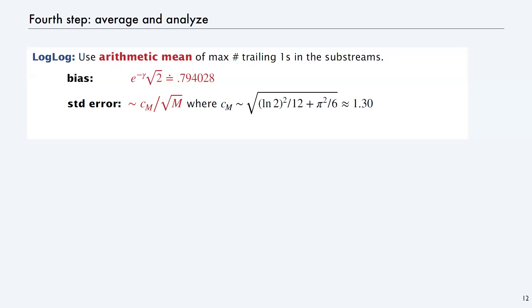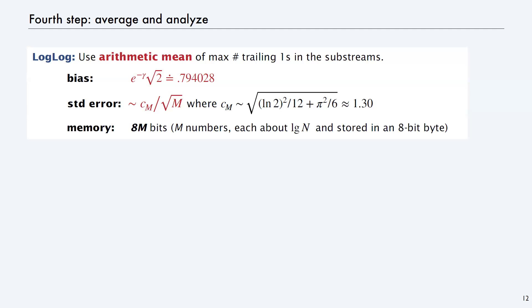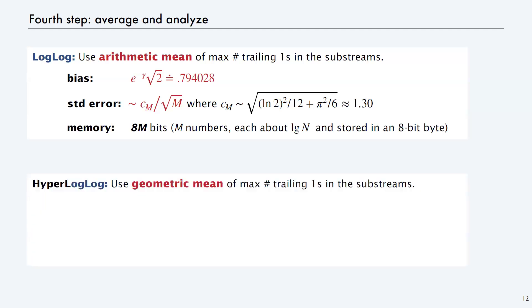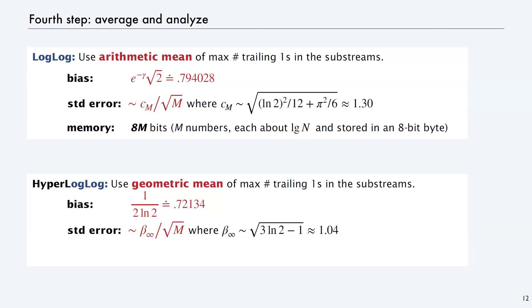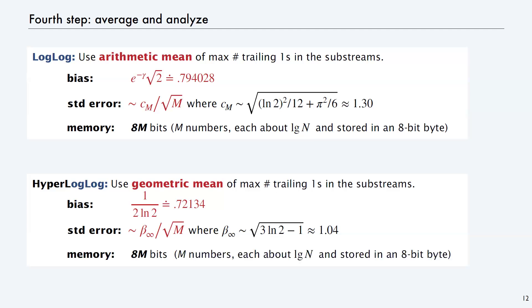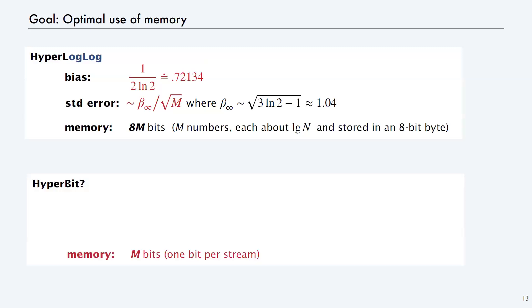With log-log counting, you use the arithmetic mean. That turns out to be related to a property of tries studied since the 70s, and you can figure out the bias and standard error. It uses 8m bits. HyperLogLog a little later uses a geometric mean. You can get the bias and standard error, and it's much more accurate: 1.39 versus 1.04. It's not all that much harder to compute, and it's the same amount of memory. So the goal now is an algorithm that uses just 1 bit per stream rather than 8 bits - a lot less.